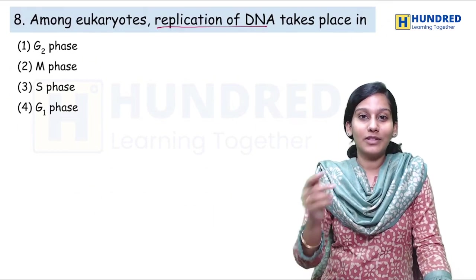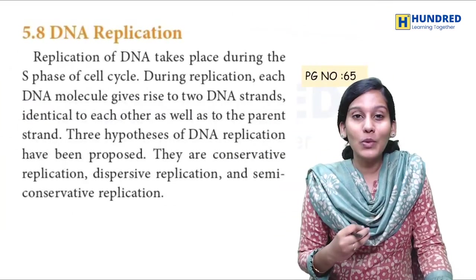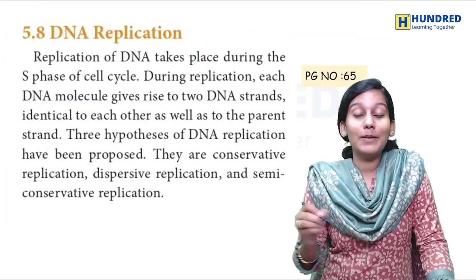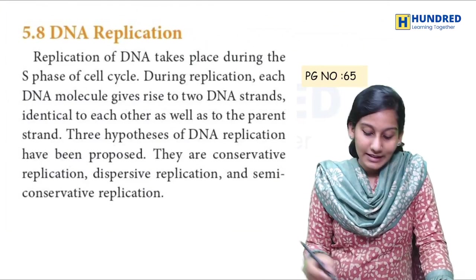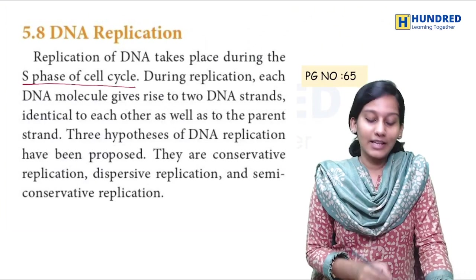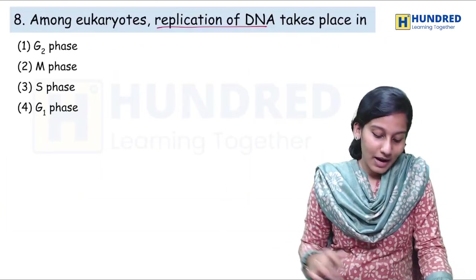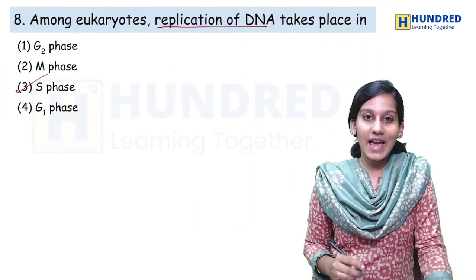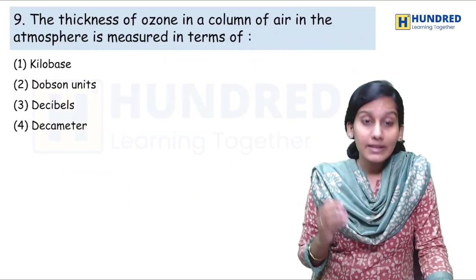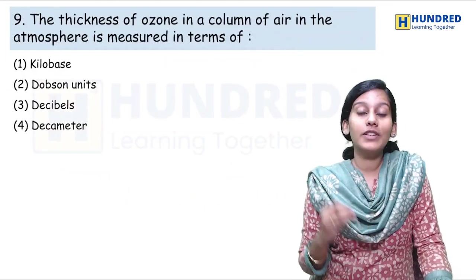Among eukaryotes, replication of DNA takes place in which phase? The first line in the Molecular Biology book, chapter 5 — replication of DNA takes place during the S phase of the cell cycle. So straight away you can mark the answer: during the S phase.